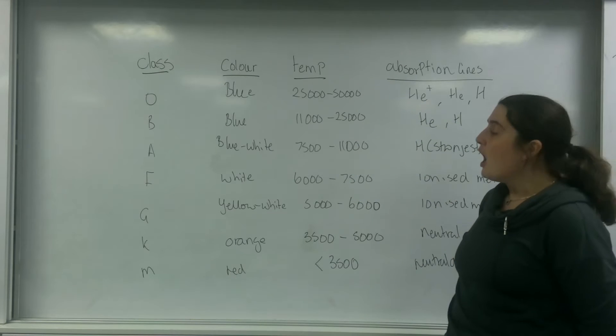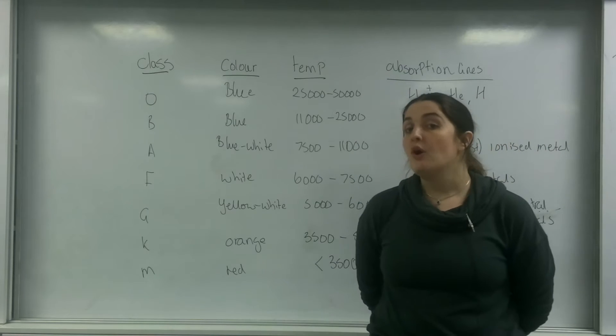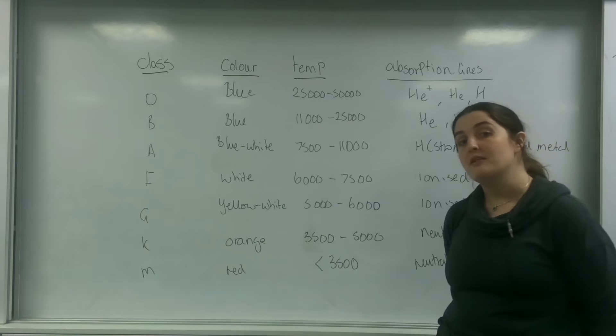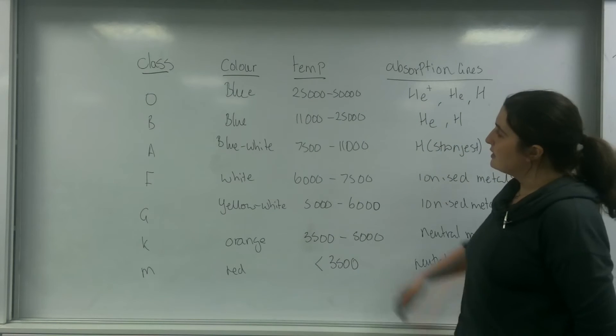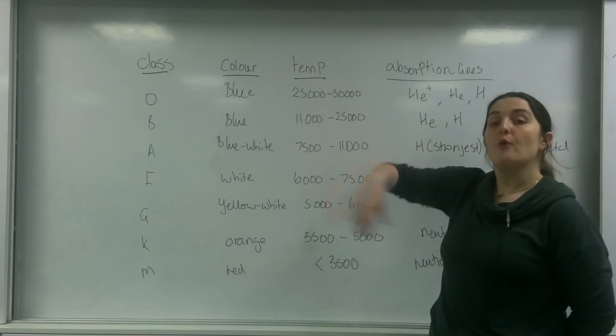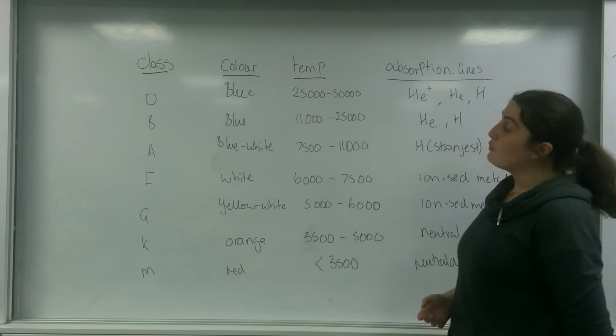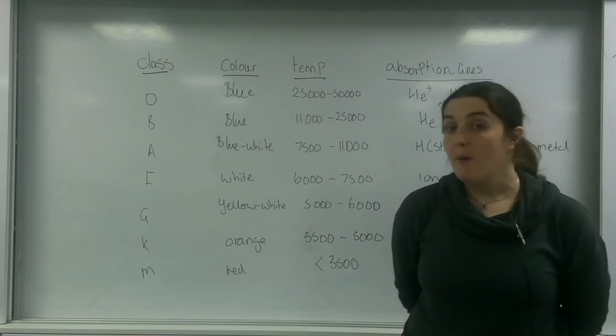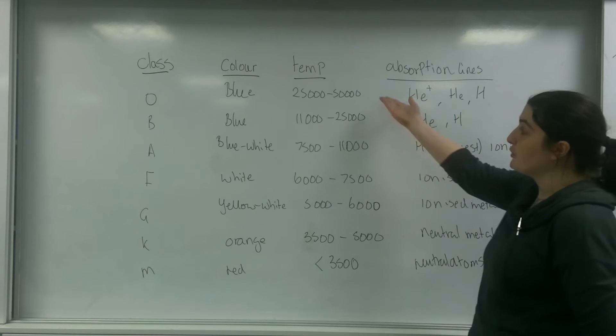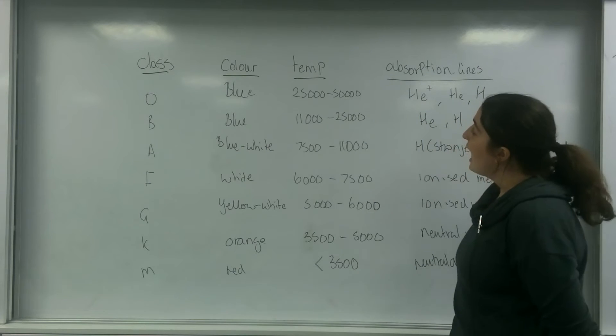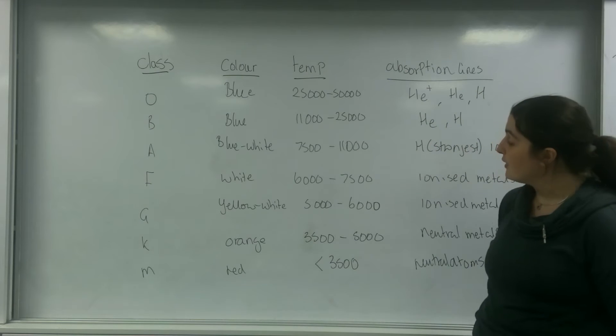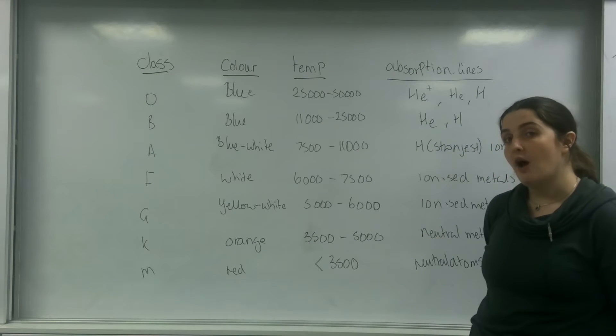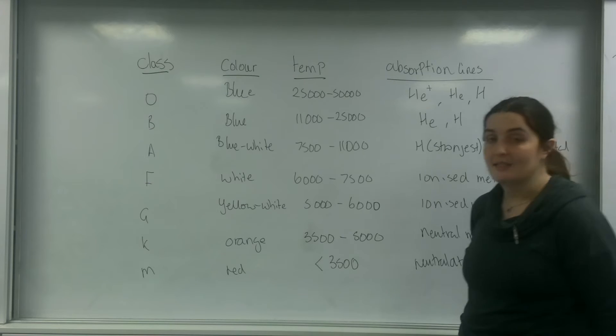These temperatures are important because they are used in Stefan's law as well as relating to Wien's law and color. The O class star, which originally didn't have very strong Balmer lines, happens to be one of the hottest stars that we have, between 25,000 and 50,000 Kelvin. Whereas an M class star at the bottom is a reddish color and has a temperature of less than 3,500 Kelvin.